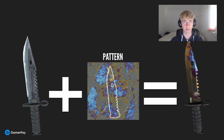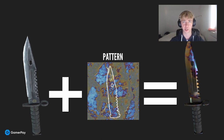If you've ever had any interest in skins, you might have come across the term patterns, which is what we are going to be talking about in this lesson of GamerPay Skin School. All CSGO skins have a pattern. A pattern is simply a number which can range from one to a thousand and can change the look of the skin greatly. The number is randomly generated alongside the float once the skin is created for a drop or unboxing. The pattern number cannot be changed.